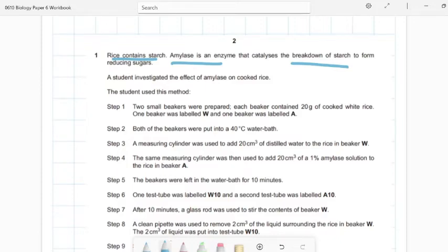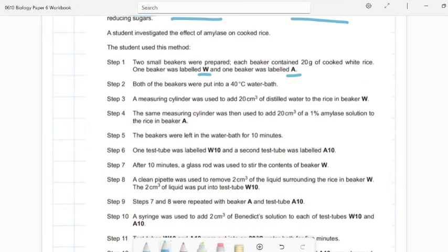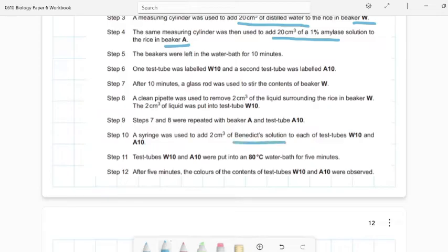So what's happening here is you have two beakers, W and A. They undergo the same procedure except into your W, you have 20 centimeters cubes of distilled water. However, on A, you have 20 centimeters cubes of amylase. So amylase is breaking down the starch into reducing sugar.